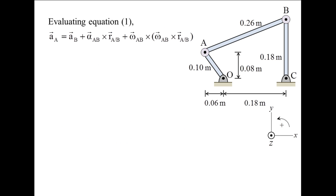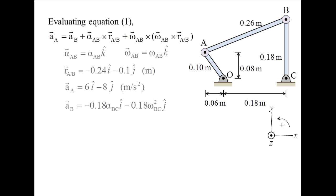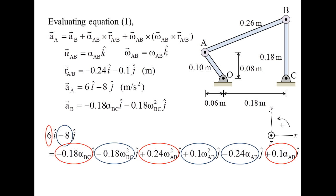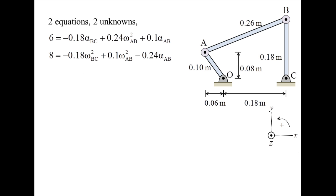Plugging in all the expressions into equation 1 and evaluating the cross products gives us the following equation. Equating the x terms and the y terms, we obtain two equations and two unknowns, and can solve for the angular acceleration of link AB and link BC. The angular acceleration of link AB is 10.42 radians per second squared in the counterclockwise direction. The angular acceleration of link BC is 19.21 radians per second squared in the clockwise direction.